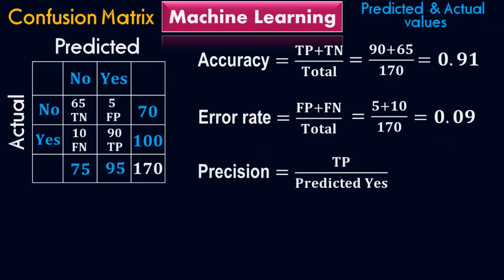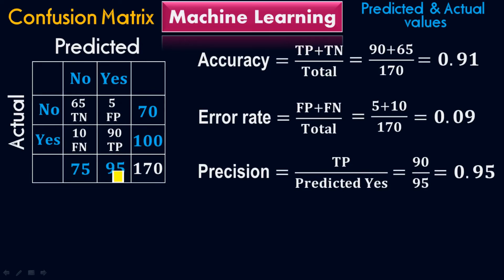To calculate the precision: the formula for precision equals true positive all over predicted Yes values. True positive is 90, and the total predicted Yes values are 95. You have to look vertically for the predicted values. Looking vertically for Yes, the total is 95. So 90 over 95 equals 0.95, which means the precision of this model is 95%.